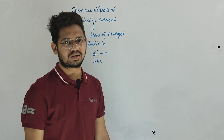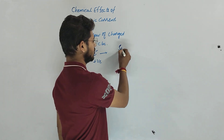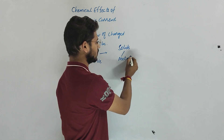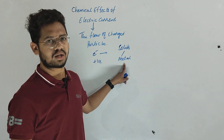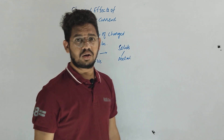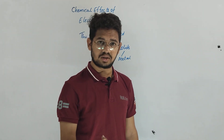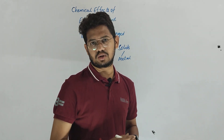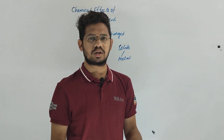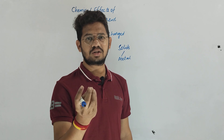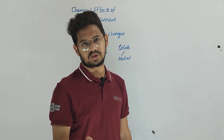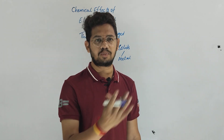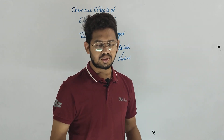Most of the conductors for electricity are solids — metals in particular. Metals are generally in solid nature. We know that metals are good conductors of electricity. For example, for electricity in our homes or offices, we use copper wires; in generators we use copper and aluminum wires, which are metals in solid form that allow electricity to flow from one point to another.